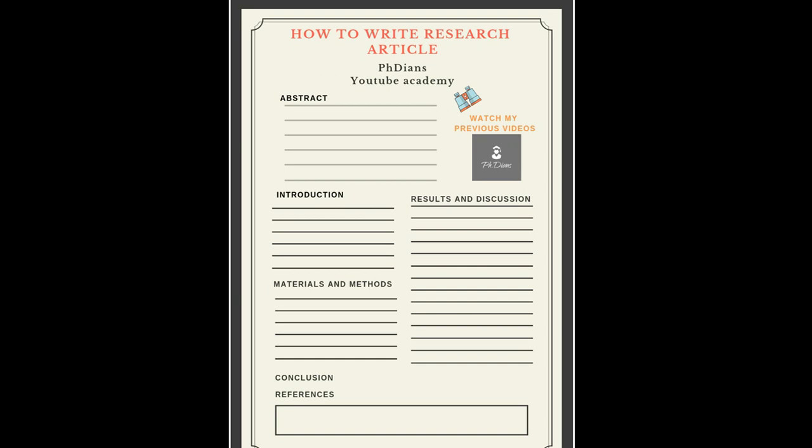Here you can see the outline of a research article, which comprises the research title, author's name and affiliation, followed by the components: abstract, introduction, materials and methods, results and discussion, and at the end, conclusion and references. If you find difficulties drafting a perfect title and abstract, you can watch my previous videos for tips.